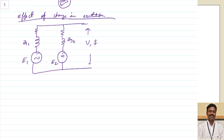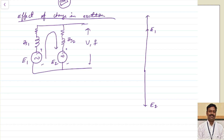Let us assume the excitation of the first generator is increased. If we take this loop and take E1 as my reference, then E2 will be out of phase because both are in opposite directions in this loop - the sum will be equal to zero. Now due to increased excitation, the EMF induced in the first generator increases to E1 dash. Because of the difference in voltages between E1 dash and E2, current will start circulating.